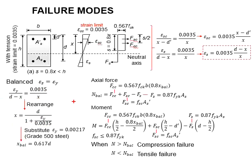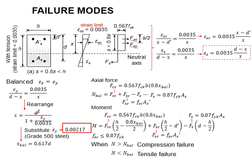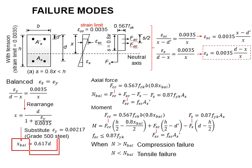For steel grade 500, the yield strain will be equal to 0.00217. Substituting this into the equation, you will obtain the neutral axis depth for the balance conditions, which is equal to 0.617d.